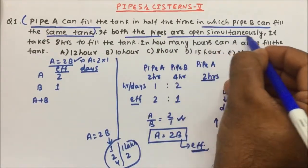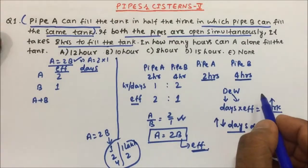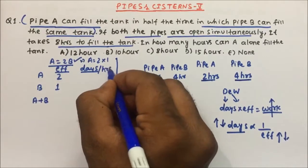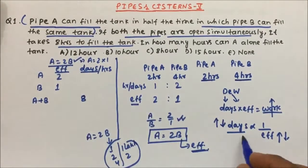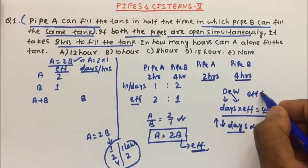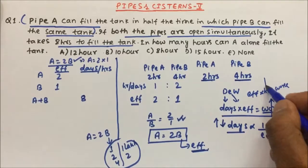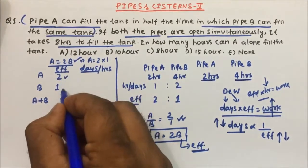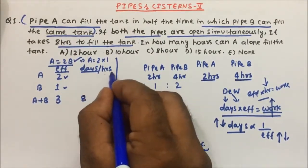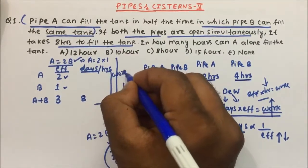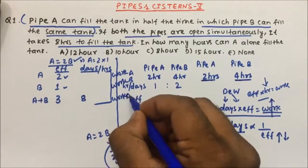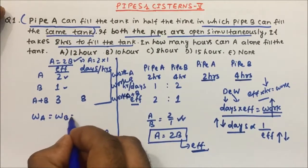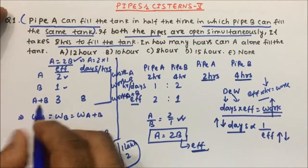If both pipes are open simultaneously, the tank takes 8 hours to fill. A+B efficiency is 2+1 = 3. Efficiency multiplied by hours equals work. Work done by A, work done by B, and work done by A+B are all the same since it is the same tank.